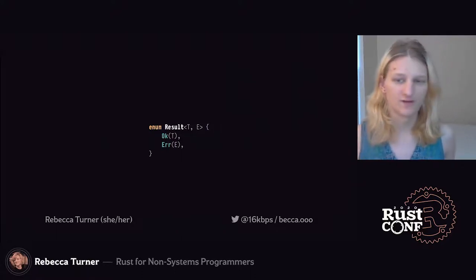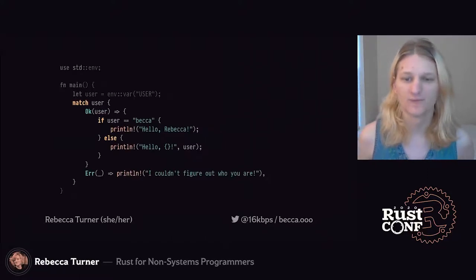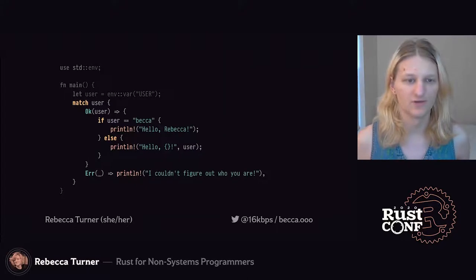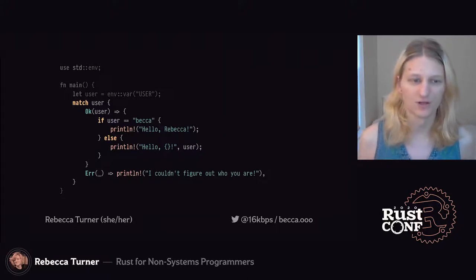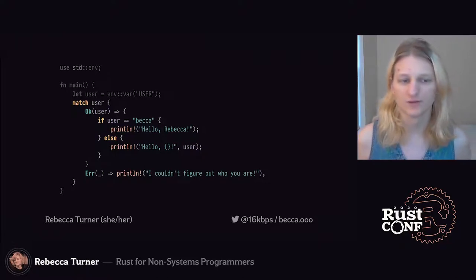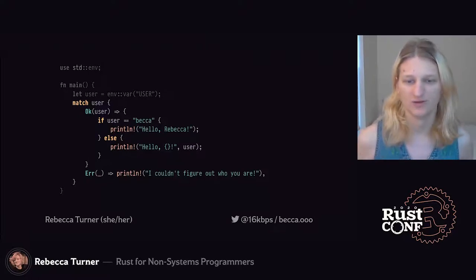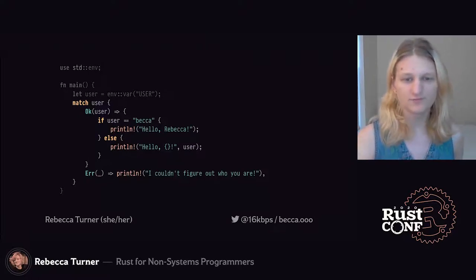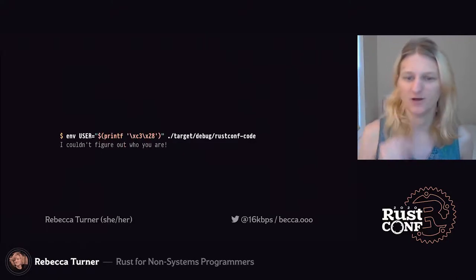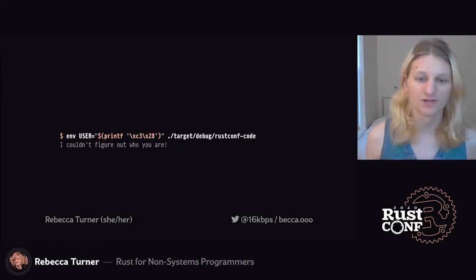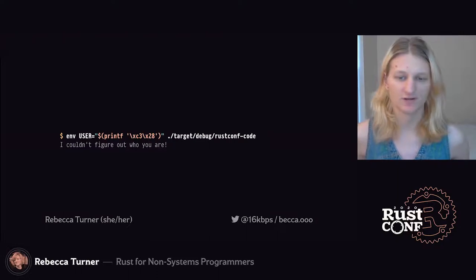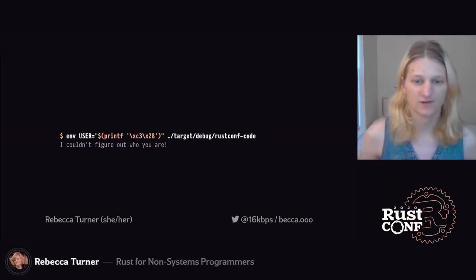One way we can deal with that error is by matching on it, which is a bit like an `isinstance` check. Here, we'll just handle an error by printing a simple message. If we have an `Ok` value, we take that and run our logic. If we have an `Err` value, we throw it away using the underscore as a wildcard and just print a message. So now when we run our program with invalid data, we print an error message instead of crashing. For the definitive rundown, check out Jane Lunsby's talk, "Error Handling Isn't All About Errors."